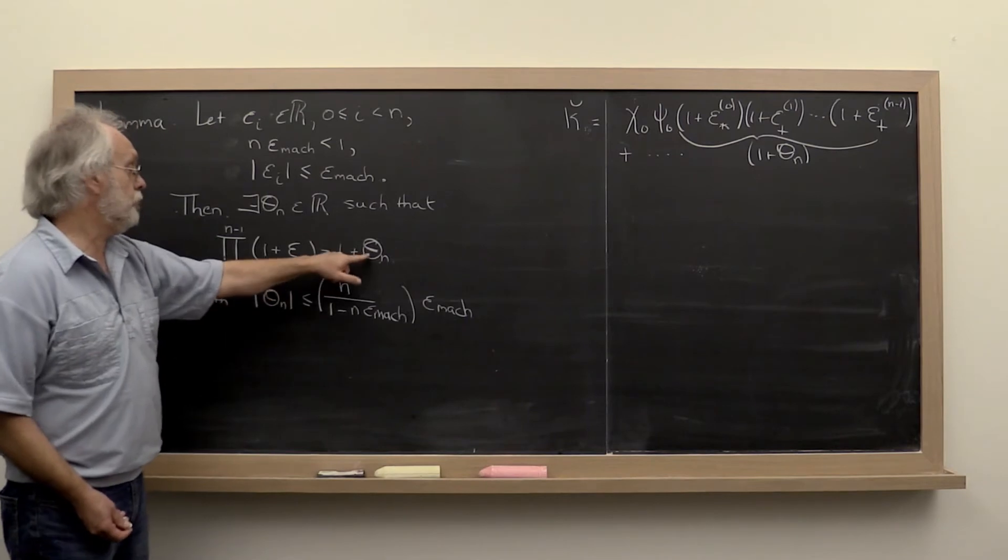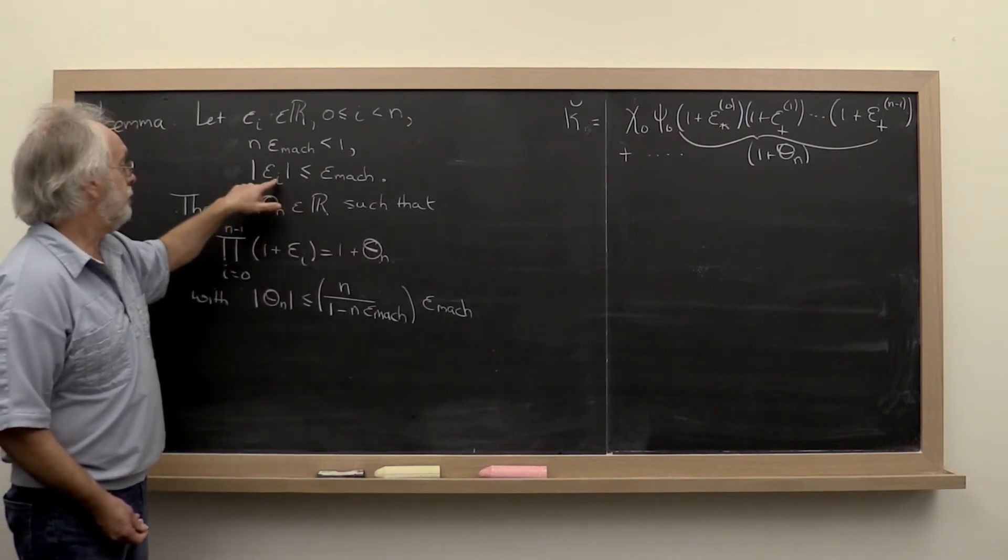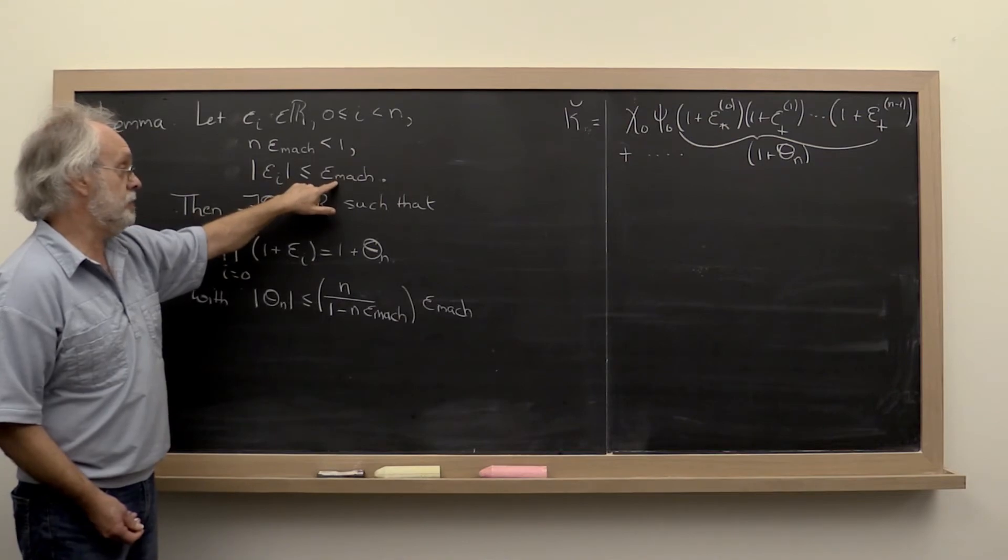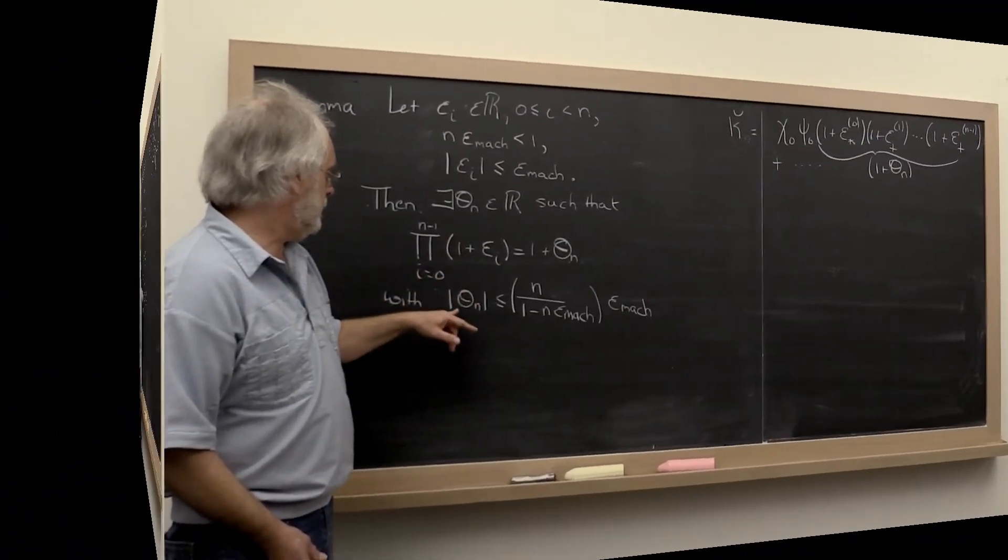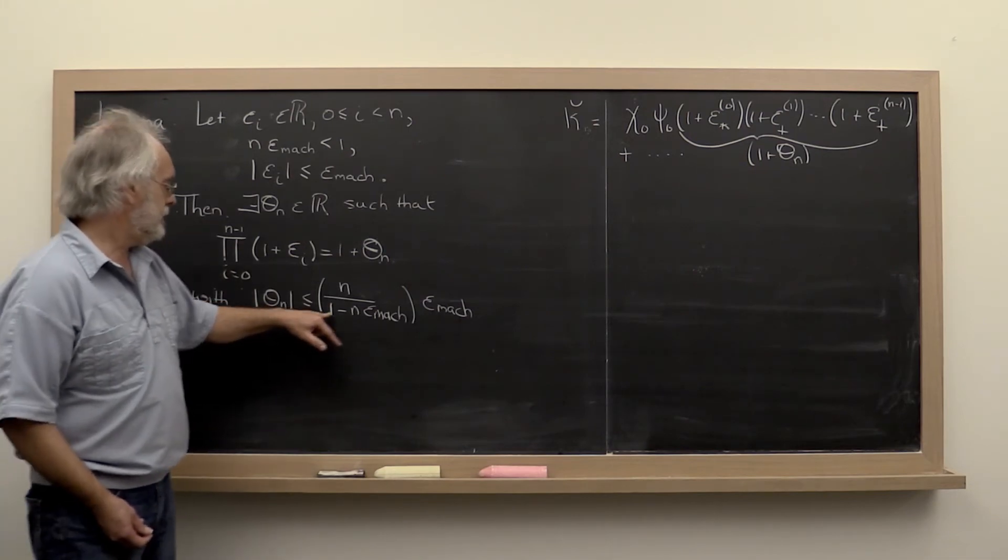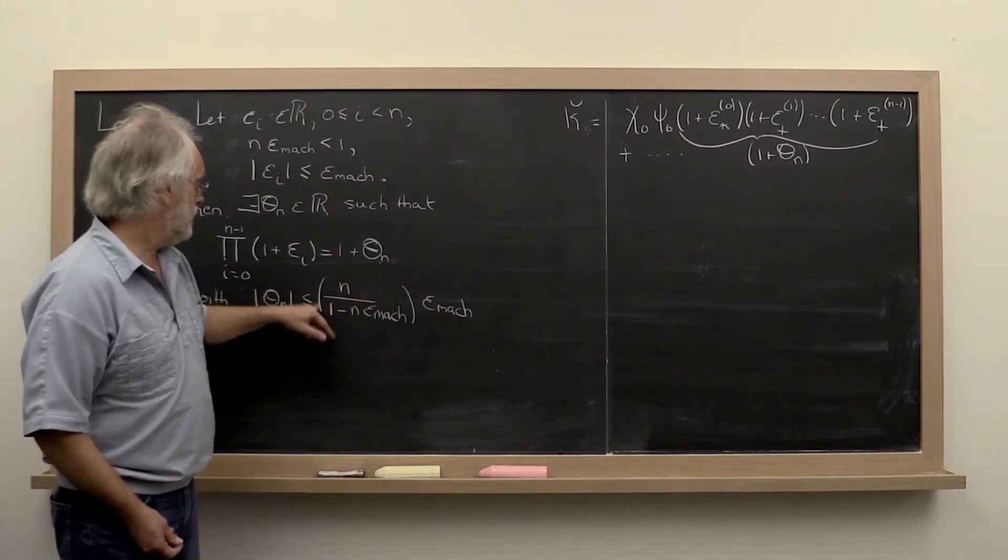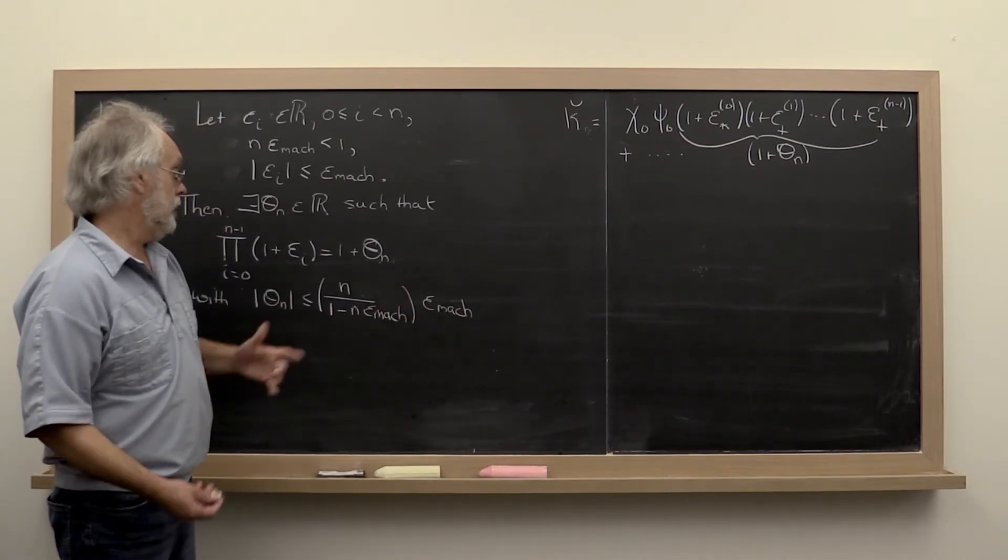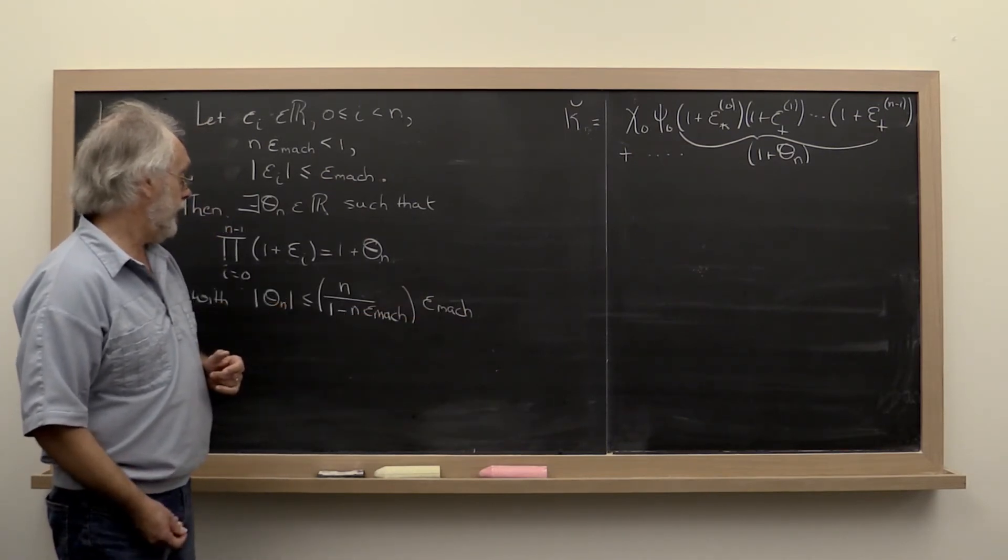Moreover, you can prove that if each of the epsilons in magnitude is less than the machine epsilon, then the absolute value of theta n is less than something times the machine epsilon, where that something is a function of n.